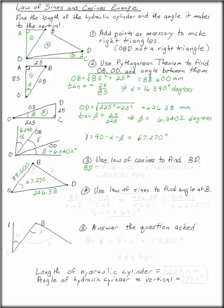BD, which is one of the things we're looking for, is the square root of OB squared plus OD squared minus 2 times OB times OD times the cosine of the angle between them, which in this case is gamma. Plug all of those things in, and you get BD is 208.81 millimeters. That's the length we were looking for. That's the length of the hydraulic cylinder.